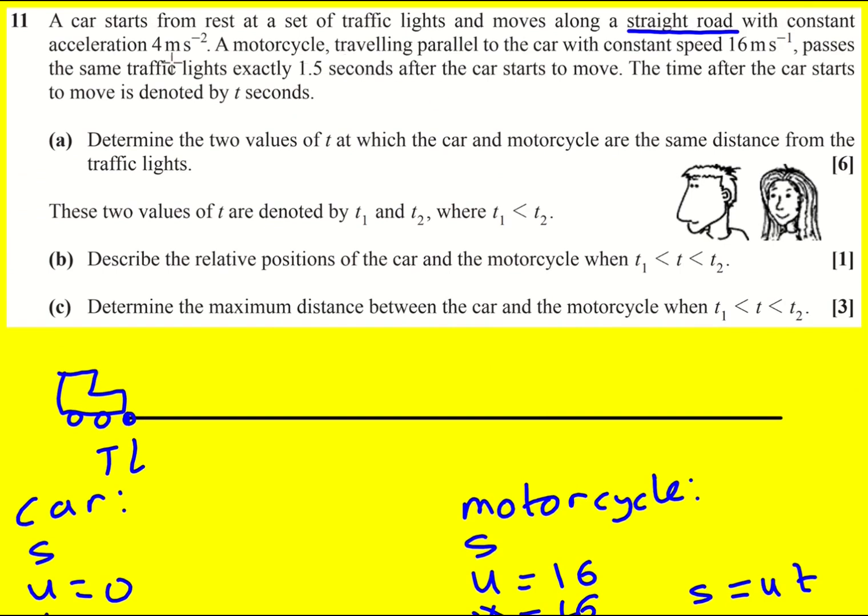This bit is quite crucial. Actually we need to look at what we're actually trying to find. Determine the two values of t at which the car and the motorcycle are the same distance from the traffic lights. So the motorcycle is starting behind because it takes 1.5 seconds to get to the traffic lights.